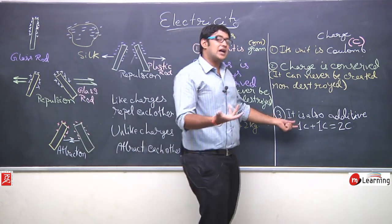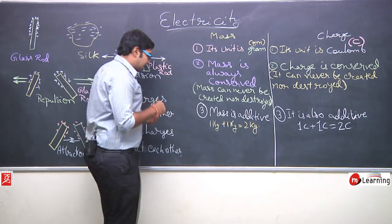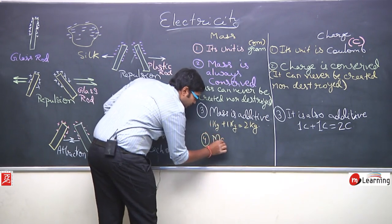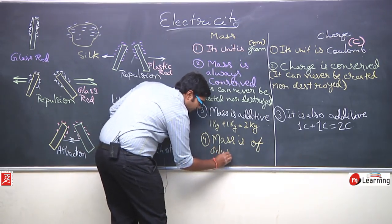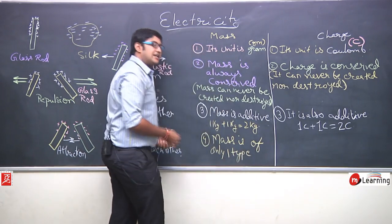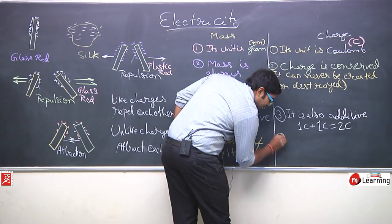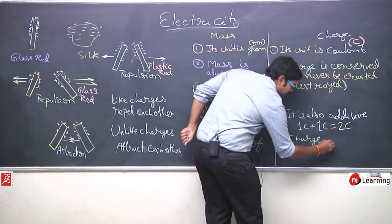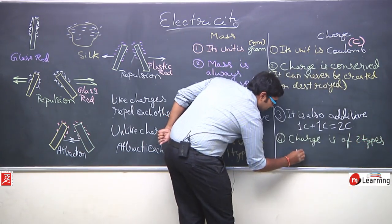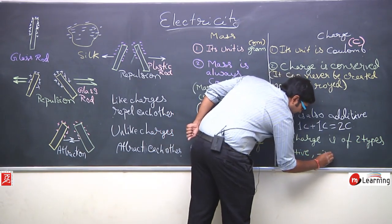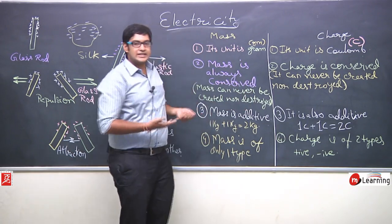The fourth property: mass is of only one type. Mass has only one kind — there is no other type of mass. But charge is of two types — one is positive charge and the other is negative charge.